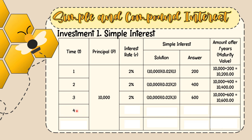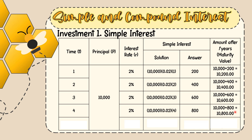For year 4, same amount of 10,000 with the same 2% interest rate, but now 4 years. Solution: 10,000 × 0.02 × 4 = 800. So 10,000 + 800 = 10,800 pesos after 4 years.